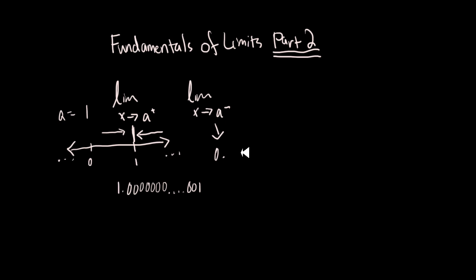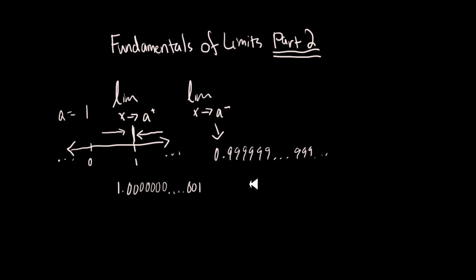When X approaches a from the left side, this equals 0.999...999. You might be wondering how this makes a difference when at the end you still just plug in one. Let me show you an example.